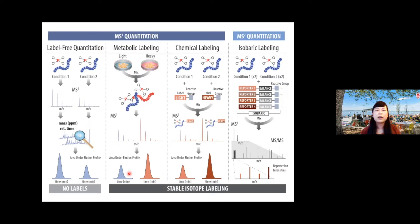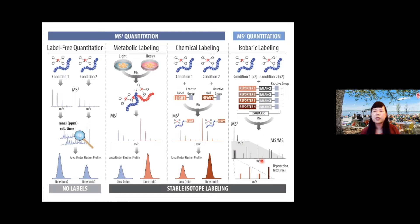There's also a big category of chemical labeling — for example, formaldehyde is a commonly used chemical labeling approach in a mass difference labeling scheme with light and heavy comparison. Another big category is MS2 quantification, also known as isobaric labeling, which allows multiplex quantification. You can differentially label multiple sample sets and combine them in MS1 so no spectral complexity is introduced, and then the MS2 stage allows you to quantify relative protein abundance based on reporter ion ratios.